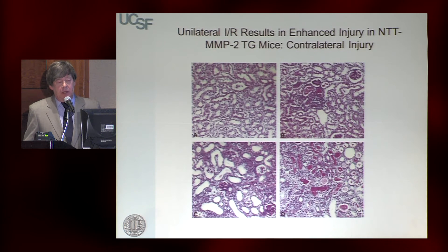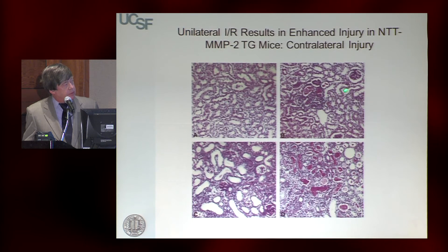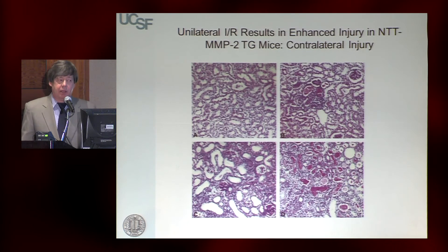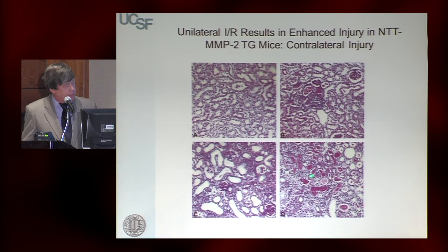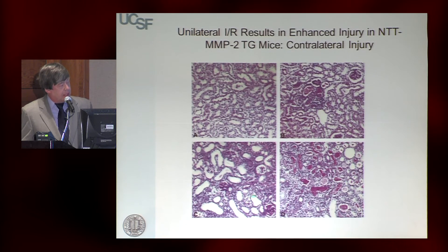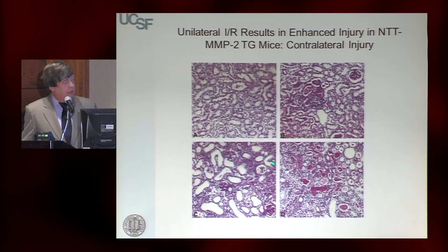We performed a unilateral IRI with a limited degree of injury. The wild-type control shows mild to moderate tubular dilatation and cast formation. When we did the same to transgenic mice expressing the truncated variant, the injury was much more severe — expression of the intracellular isoform primes the kidney for more severe AKI. Also interesting: the contralateral kidney, which was not clamped, showed substantial injury at 96 hours, representing release of DAMPs into the circulation going to the contralateral kidney.